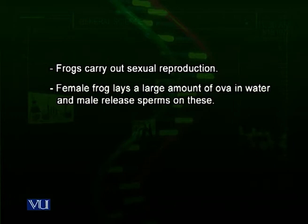Frogs carry out sexual reproduction. They are amphibia — organisms that represent a transition between aquatic and land animals — spending part of their life in water and part on land. For reproduction, frogs go to water. Female frogs have ovaries which produce large numbers of ova, which are released into the water. Male frogs have testes which produce sperms that are laid down on the ova.